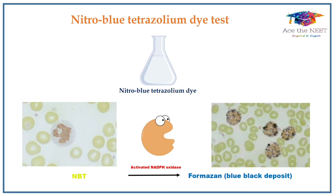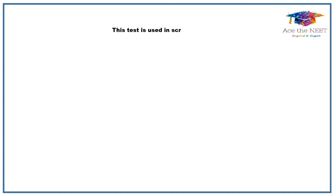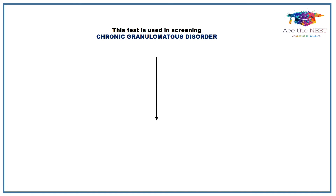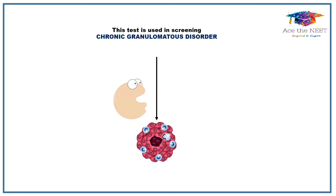So where is this test used? This test is used in screening chronic granulomatous disease, which is an inherited condition affecting the genes encoding for NADPH oxidase. It is characterized by defective bacterial cell killing due to defective production of reactive oxygen species by the neutrophils.